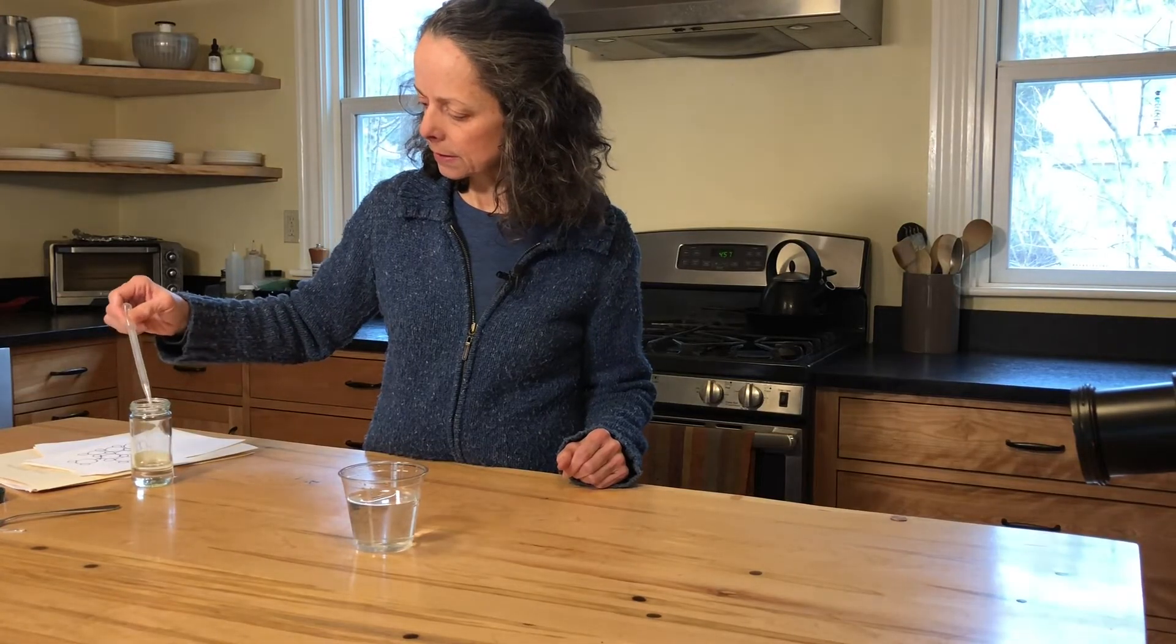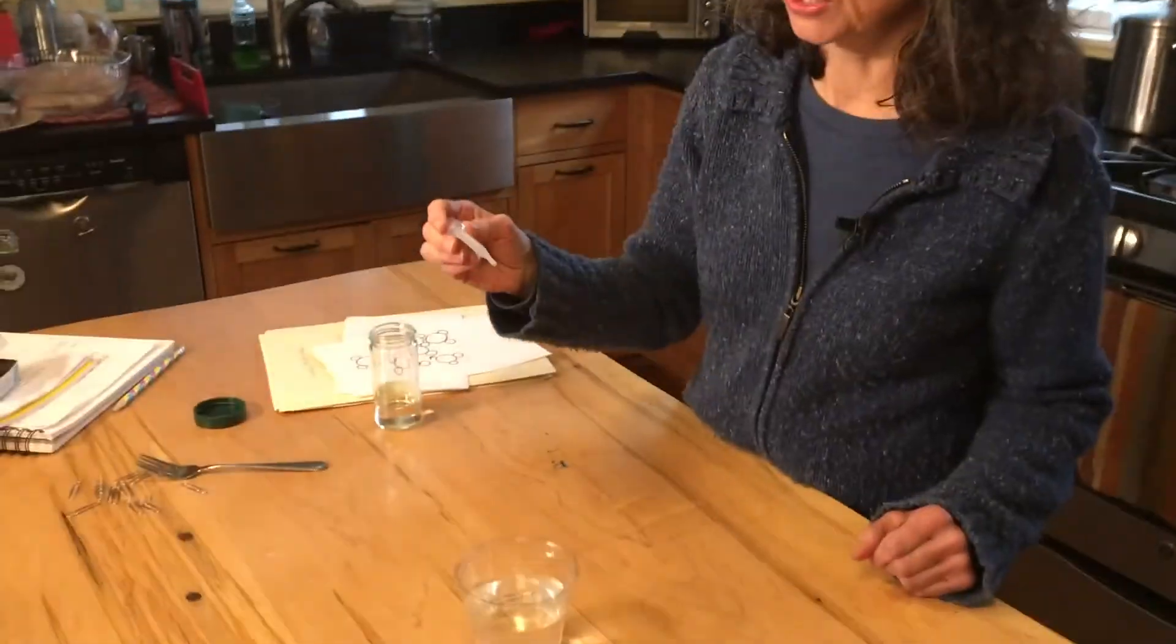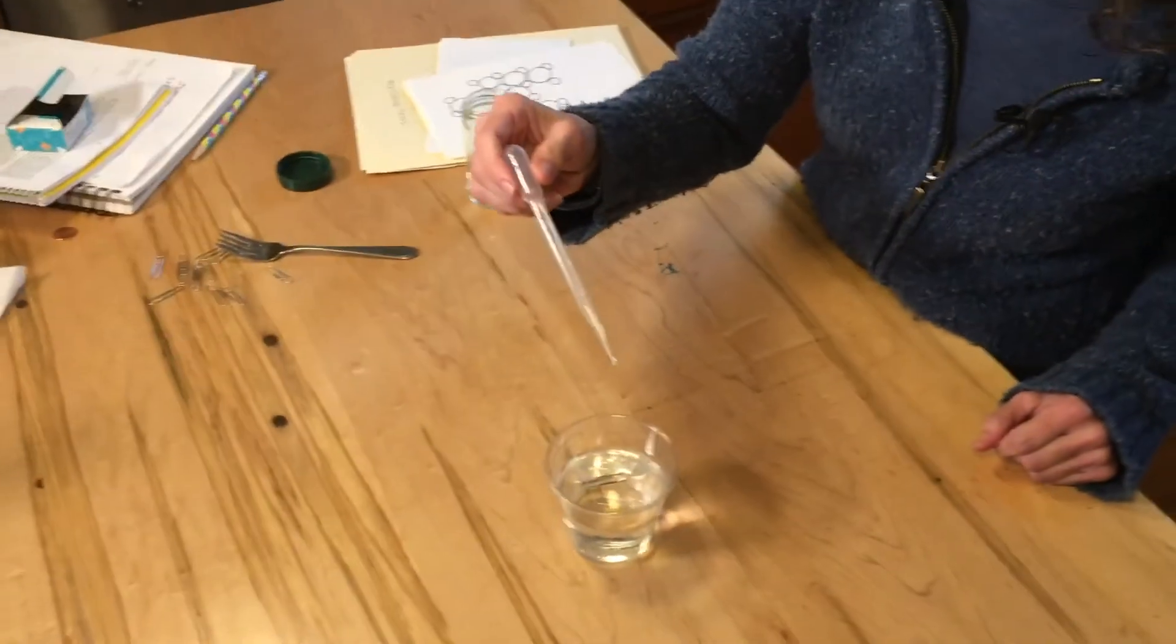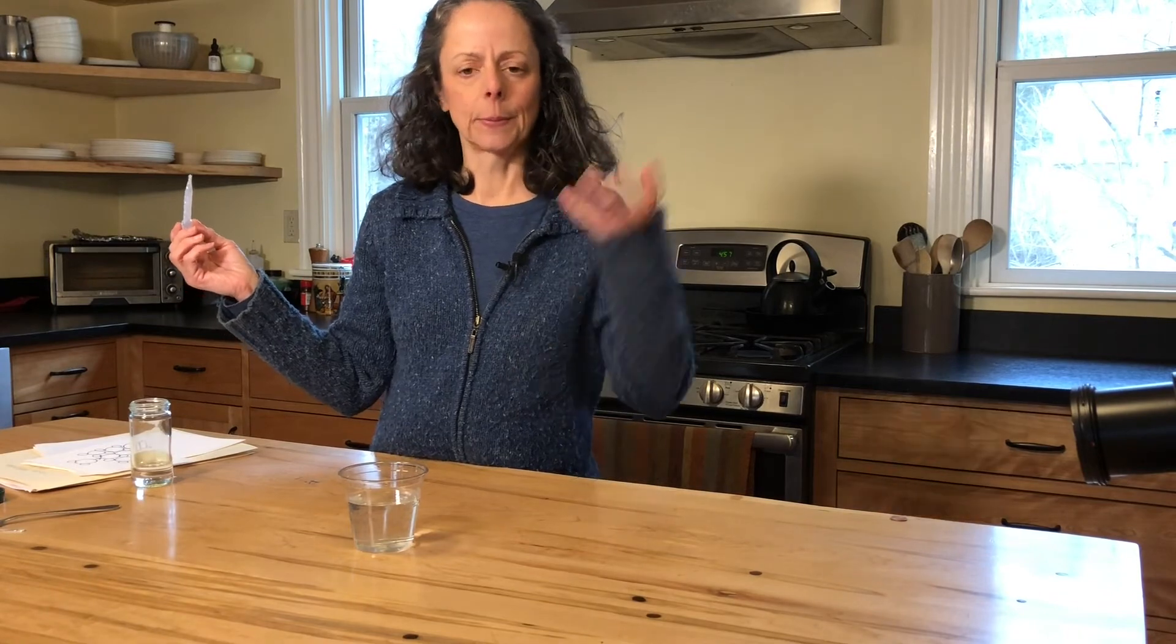Now let me show you something else. In my eyedropper I've got just a little bit of dish soap, dish detergent. And dish detergent has a quality of its own which breaks surface tension. Look at that. The surface tension skin got broken by the soap and the paper clip sank right down with the pull of gravity. Pretty fun, huh? You could try this at home.